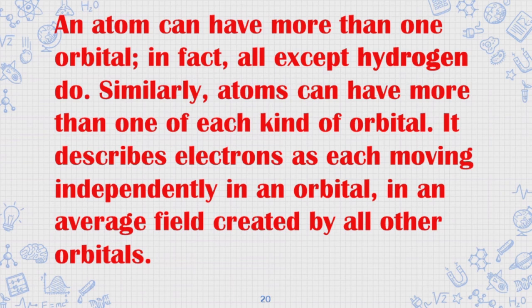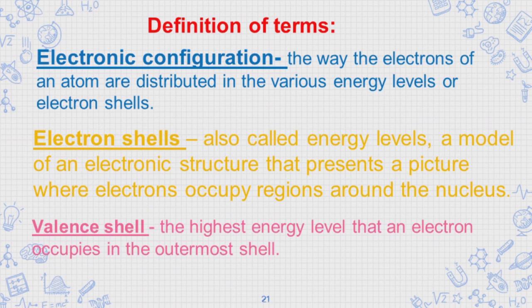Similarly, atoms can have more than one of each kind of orbital. It describes electrons as each moving independently in an orbital in an average field created by all other orbitals.